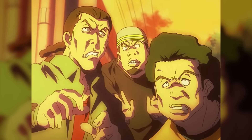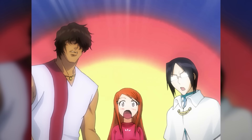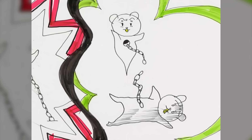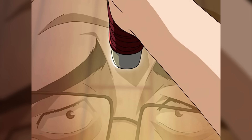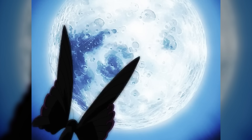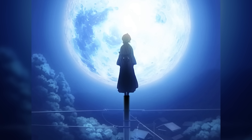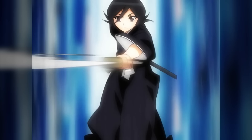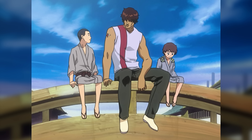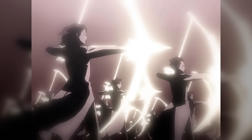A human is the most basic type of soul and it resides in a body of Kishi, the material that makes up the world of the living — best understood as the equivalent of atoms and molecules. Their soul is connected to their material bodies via a chain of fate, and upon their deaths, this chain is severed. They travel between life and death through the Konso ritual and reincarnation. A Shinigami is a soul that possesses high amounts of Reiryoku, or spiritual power, as well as a body of Reishi, or spiritual particles.